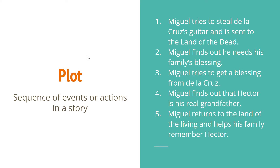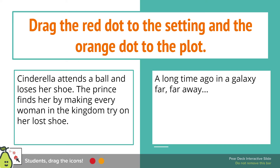The plot is the sequence of events or actions in a story — basically what happens. In Coco: first, Miguel tries to steal de la Cruz's guitar and is sent to the land of the dead; then he finds out he needs his family's blessing; then he tries to get a blessing from de la Cruz; then Miguel finds out that Hector is his real grandfather; and finally Miguel returns to the land of the living and helps his family remember Hector.